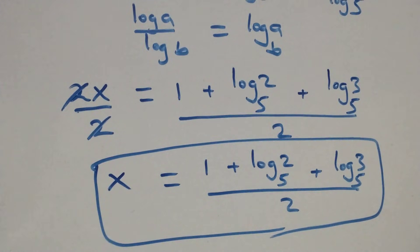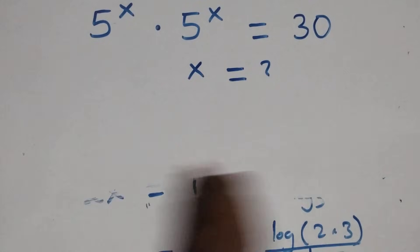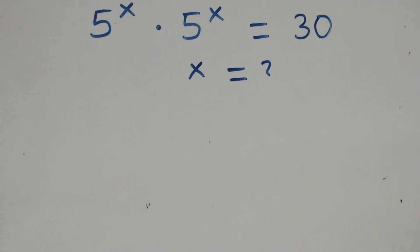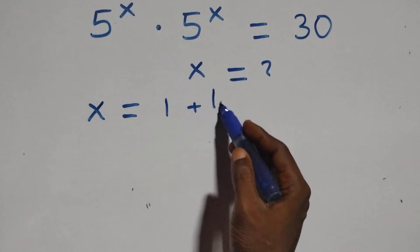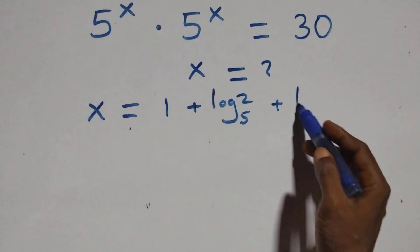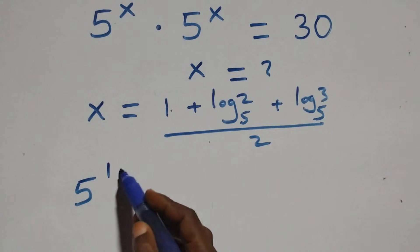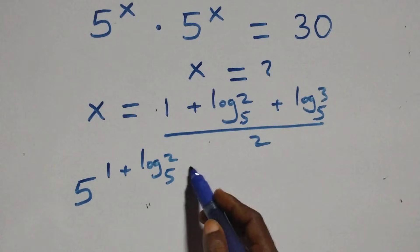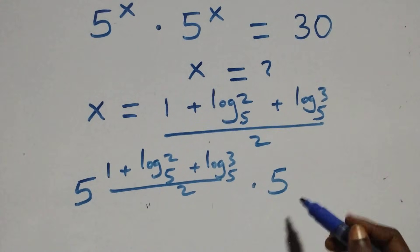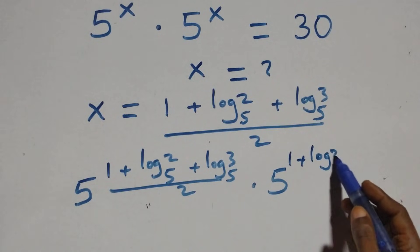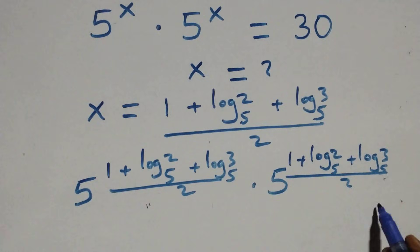The value of x is (1 + log₅2 + log₅3) / 2. Let's check: substituting back, we have 5 raised to power (1 + log₅2 + log₅3)/2, times 5 raised to power (1 + log₅2 + log₅3)/2, equals 30. Since we have the same base multiplying, we follow the law a^m · a^m = a^(2m).